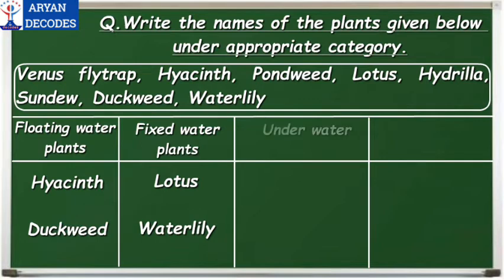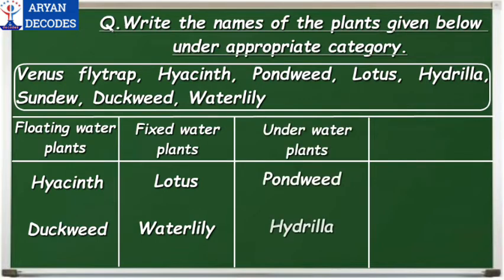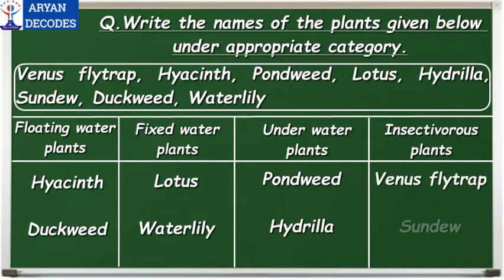Third, underwater plants — the answer is pondweed and hydrilla. And finally, insectivorous plants — the answer is Venus flytrap and sundew.